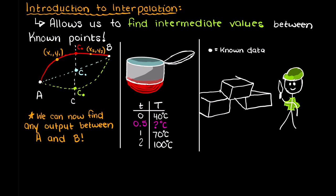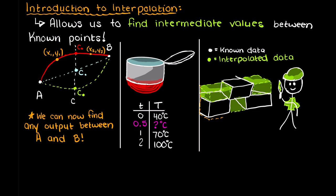In theory, we could track the temperature of our pot of water at every single time point from 0 to infinity. However, this is time consuming, tedious, and not to mention impossible. Therefore, we track enough points to fully understand our system the best we can, and we use interpolation when necessary to fill in the blanks.